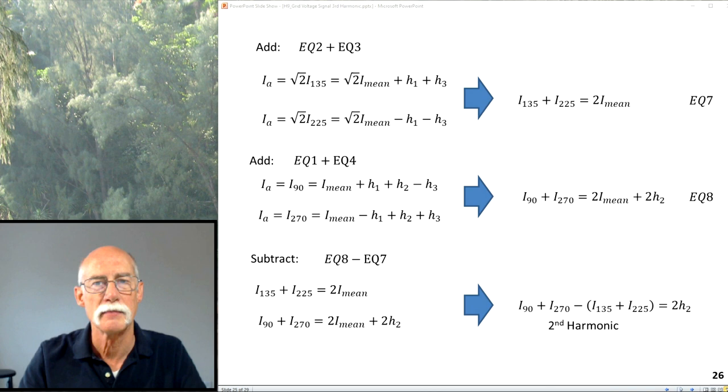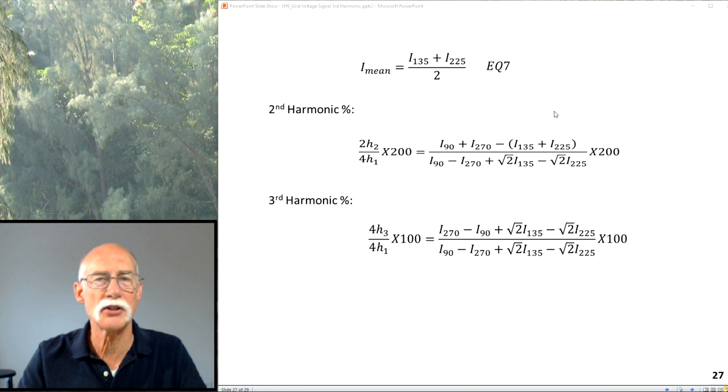Similarly, we add two and three together, and we get a new equation. Add one of four, get a new equation, subtract these two, and we've solved for the second order harmonic. So the third job's done. And we know that I mean is I135 over I225 divided by two, because we get that from equation seven. Now we have H2, H1. This is multiplied by 200 again, because the way the math works out is 2H2 over 4H1 times 100, which is this. Here's a third order harmonic.